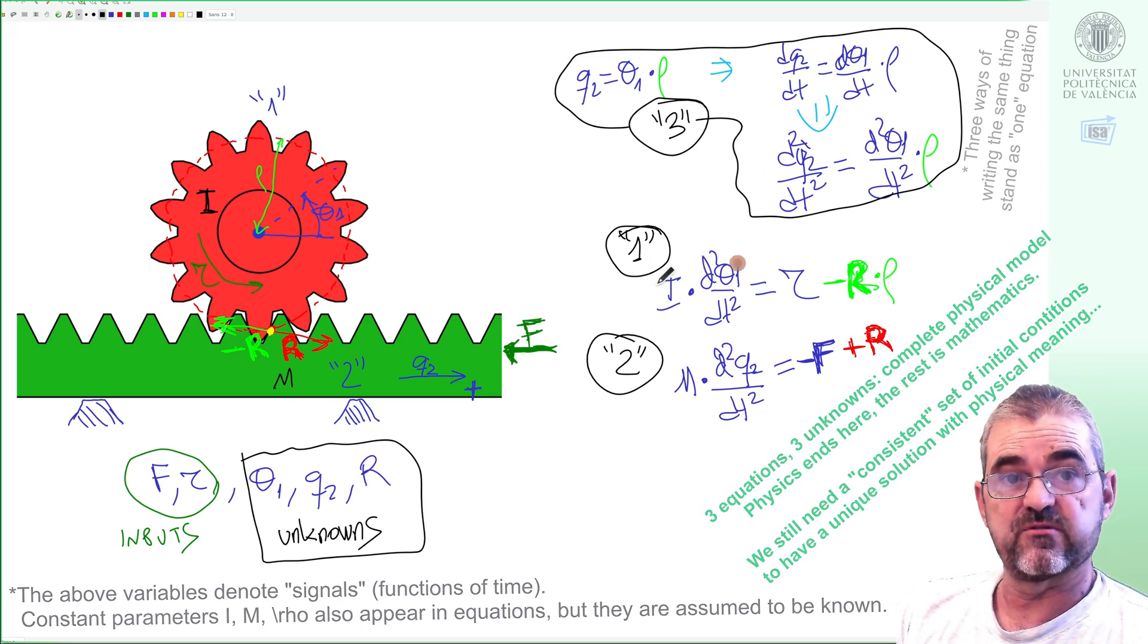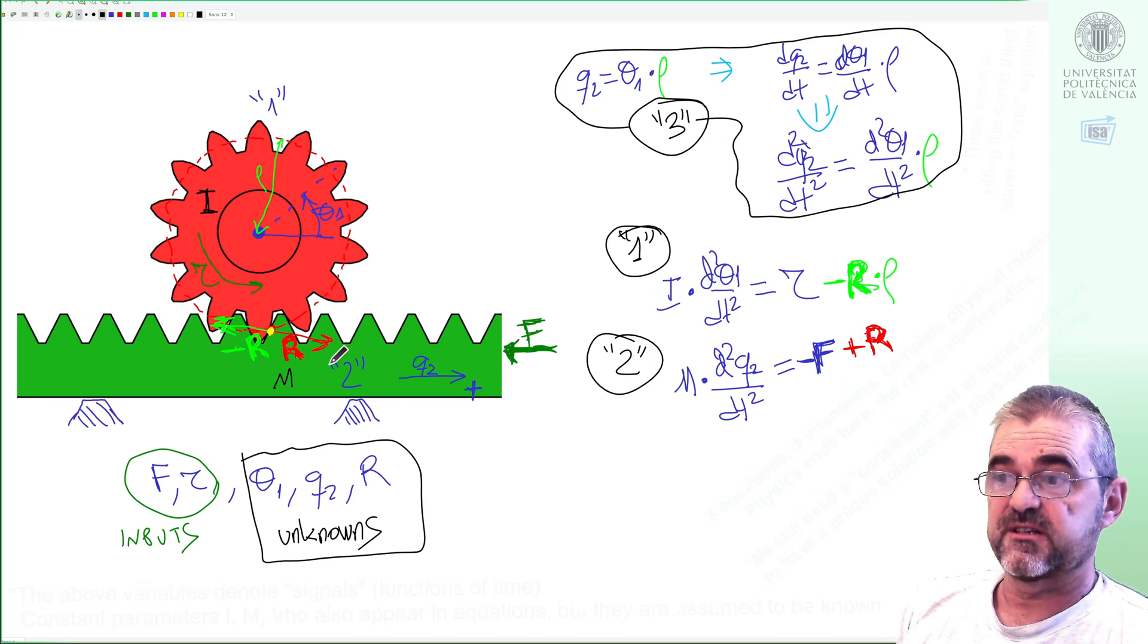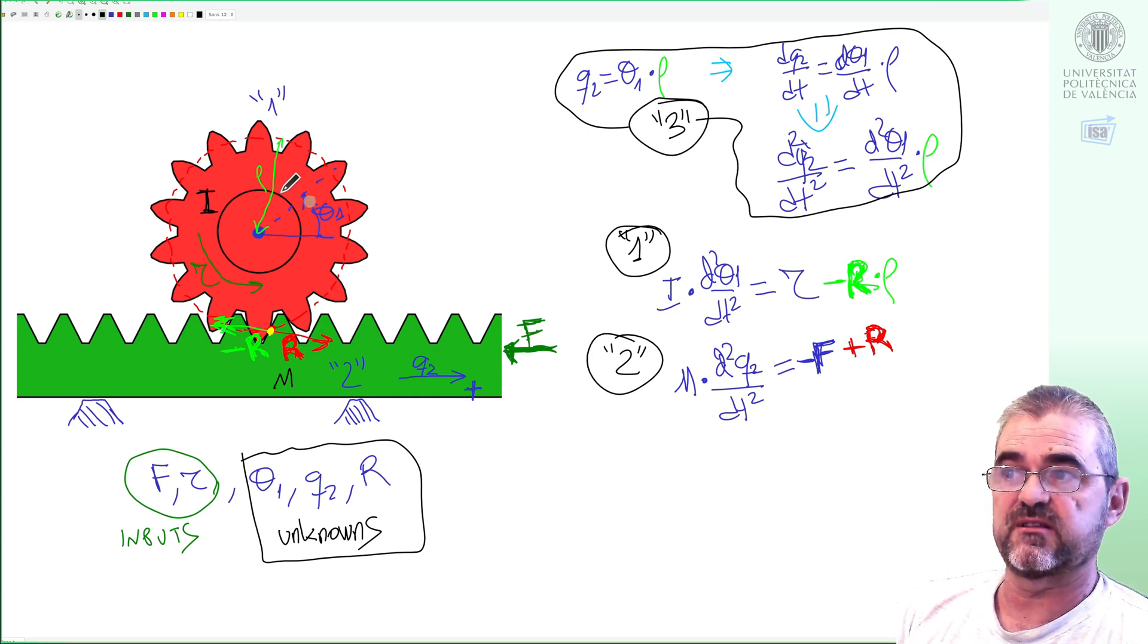As this mechanical system has what is say one degree of freedom, because if I know the rotated angle then with these equations I can immediately multiply by rho and tell the green object's movement.